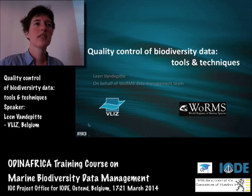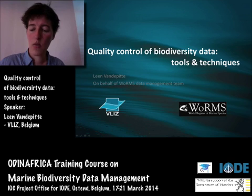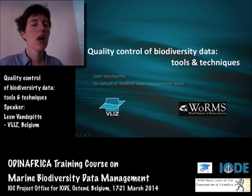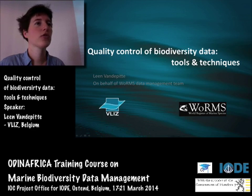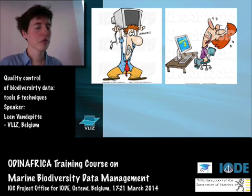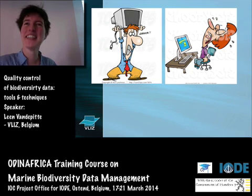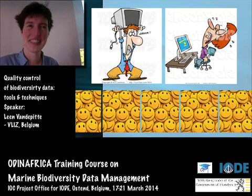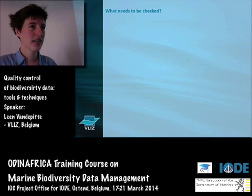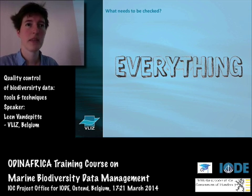Following the taxonomic standards, biodiversity standards, and metadata standards covered previously, we're now going to walk through how you can do the quality control of your datasets yourself. I'll go through the different steps — if there are any questions, you can just interrupt me. The first thing you have to ask yourself when you get a dataset is: what needs to be checked? Basically everything. You need to go through the whole dataset step by step because everything can be a possible error.